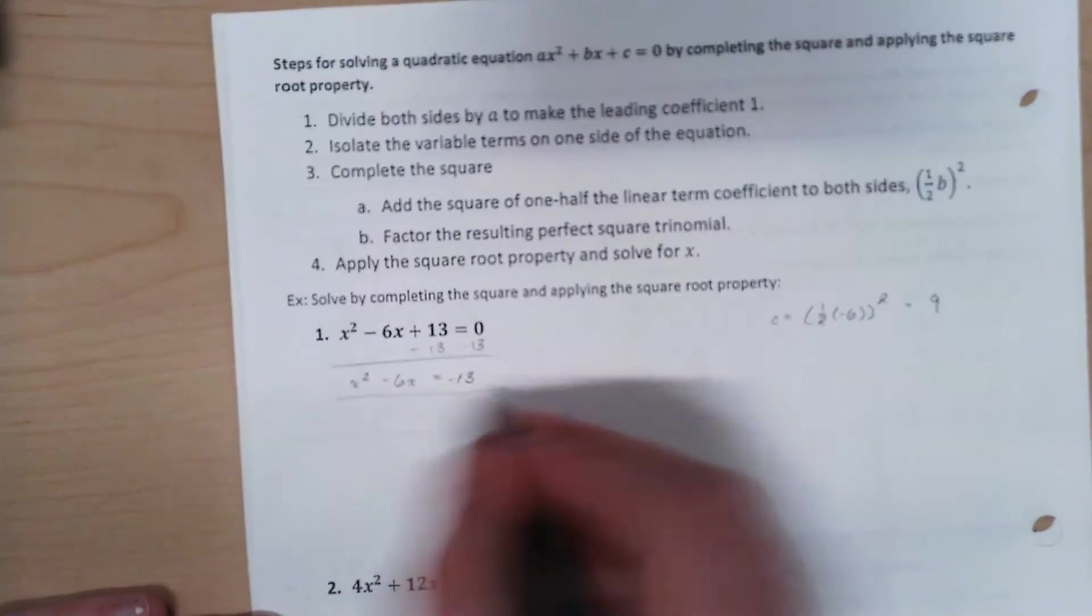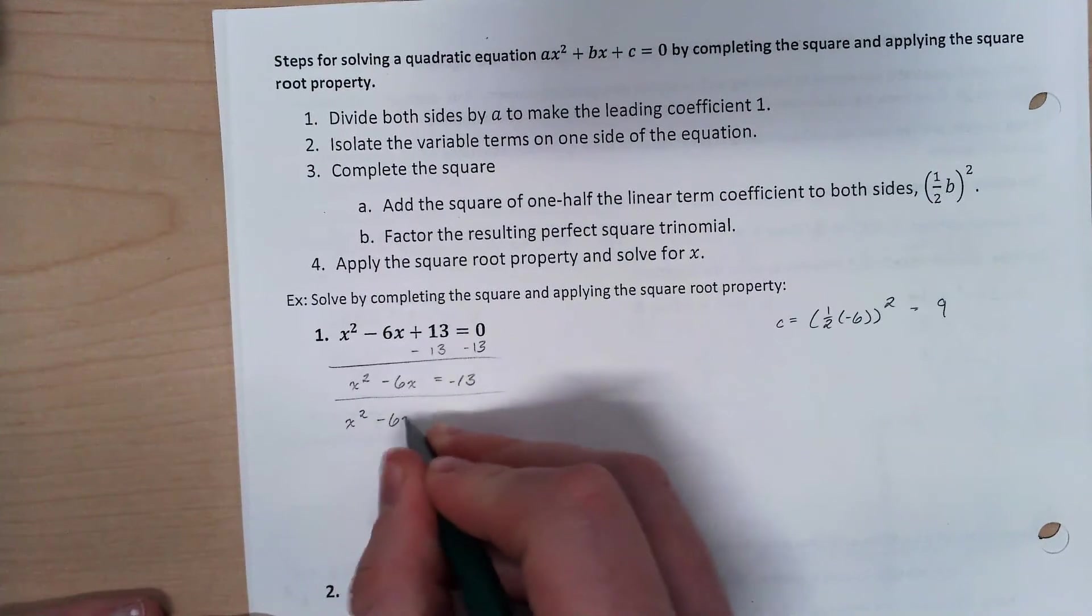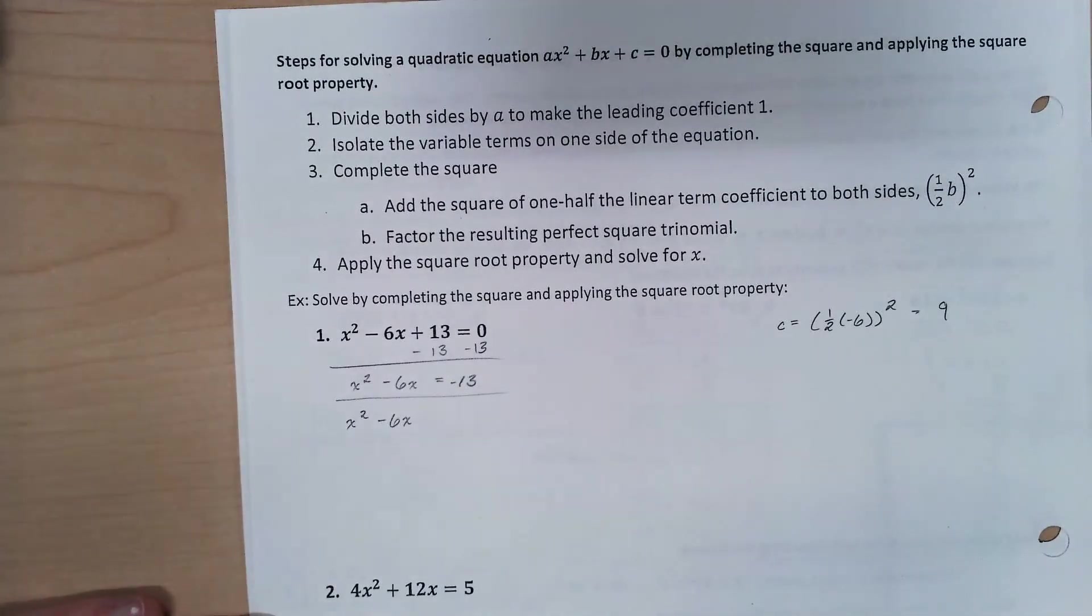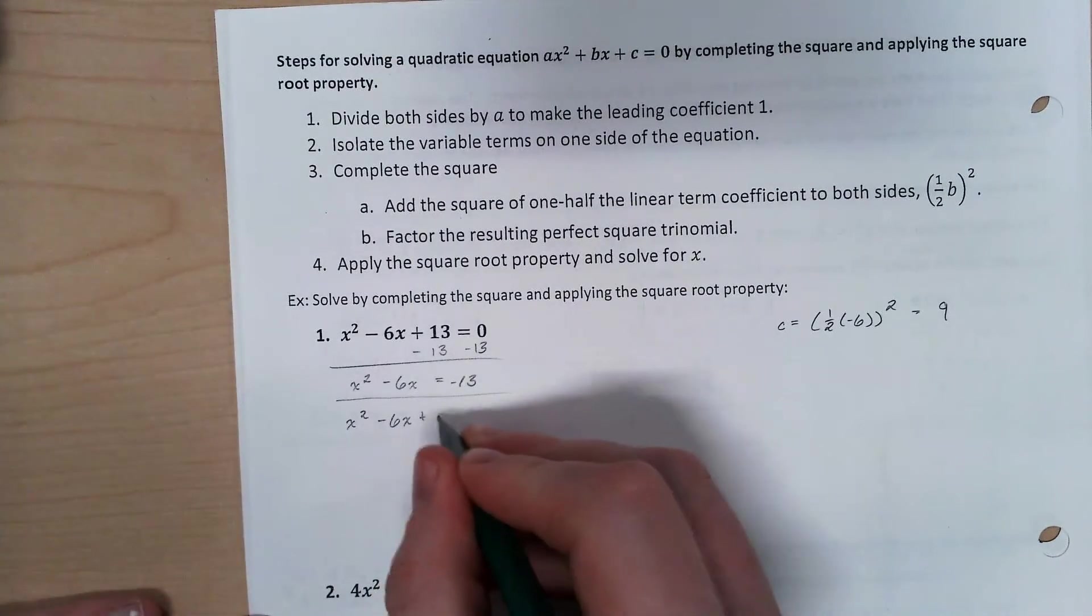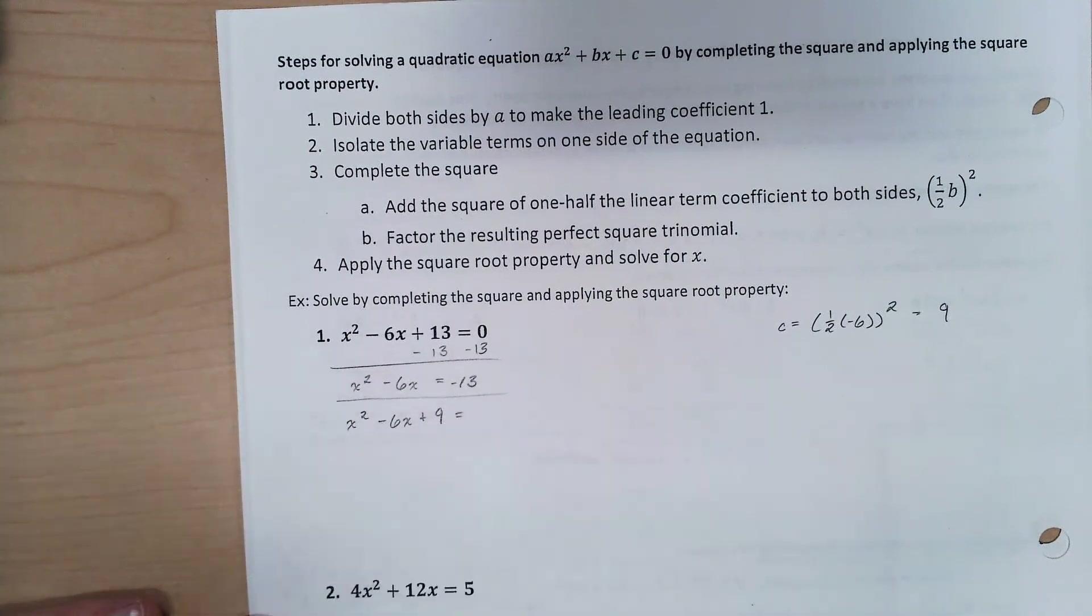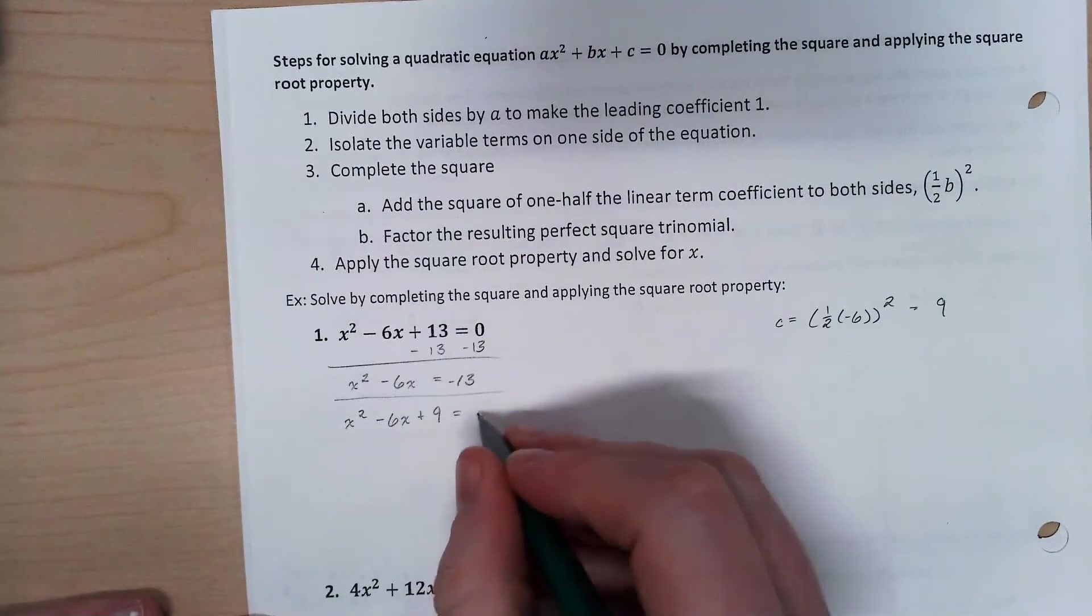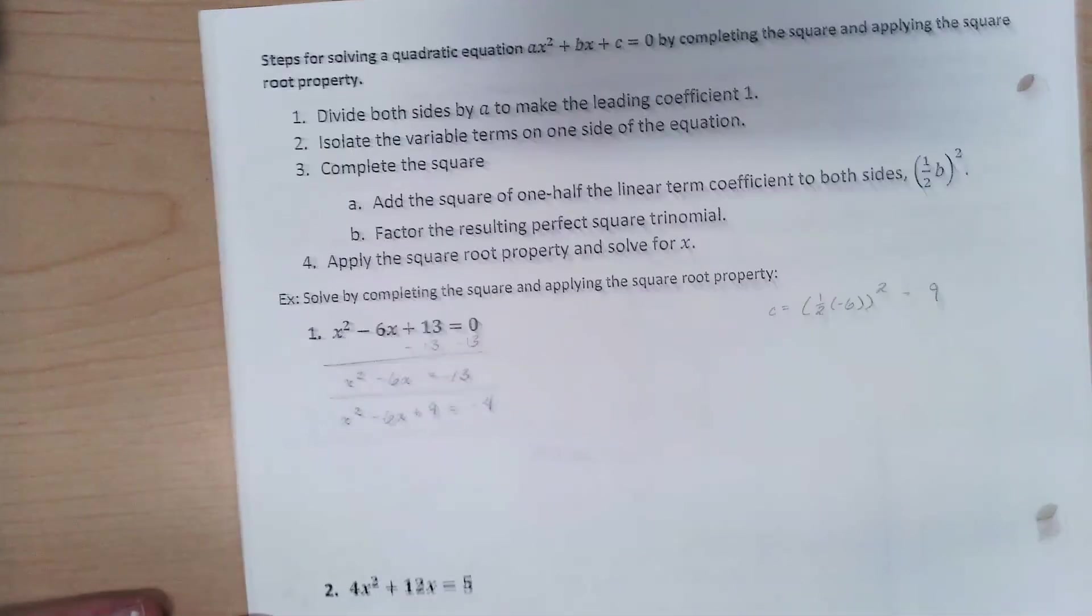So something I've got to be careful of here. We're still doing algebra. So when I add 9 there, I need to add it to both sides. So negative 13 plus 9 puts me at negative 4.